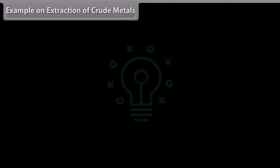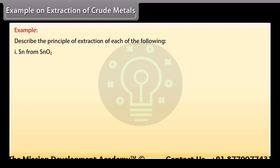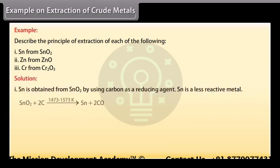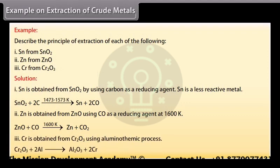Example on extraction of crude metals. Let's take an example on extraction of crude metals. Describe the principle of extraction of each of the following: Sn from SnO2, Zn from ZnO, Cr from Cr2O3. Let's see the solution. Sn is obtained from SnO2 by using carbon as a reducing agent. Sn is a less reactive metal. Zn is obtained from ZnO using CO as a reducing agent at 1600 Kelvin. Cr is obtained from Cr2O3 using aluminothemic process.